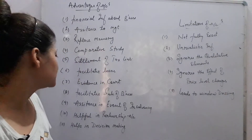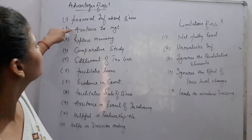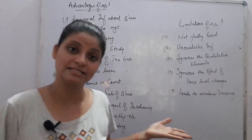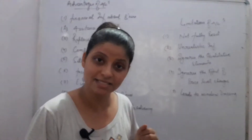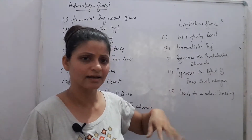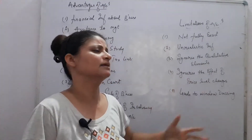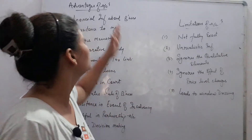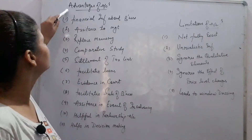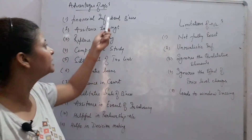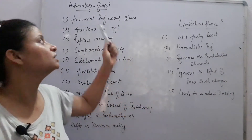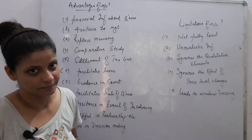Then, helps in decision making — which is somehow similar to assistance to management. If we need to make profit, we need to increase certain things. If there is a loss, we need to decrease expenses. Which production cycle to increase, which expenses to manage — these decisions are taken on the basis of our accounts. So these are the advantages of accounting, which are also the roles of accounting in business.